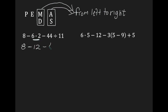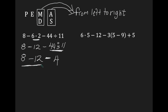Can we divide? Yes, we can. 44 divided by 11 is 4. We're going to write back all the numbers and operators we did not use. We have subtraction, so we're going to subtract first. We're going to have 8 minus 12.